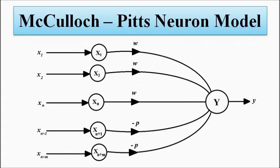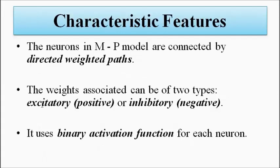These are the input signals x1, x2 up to xn, and then followed by xn+1 up to xn+m which were given to these input layers of neurons.